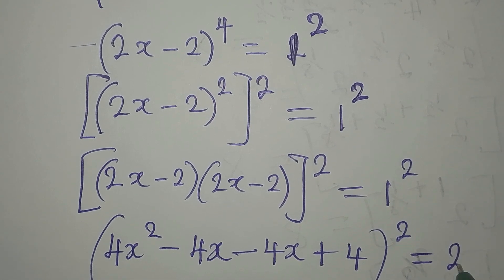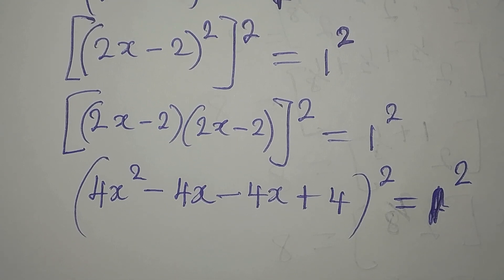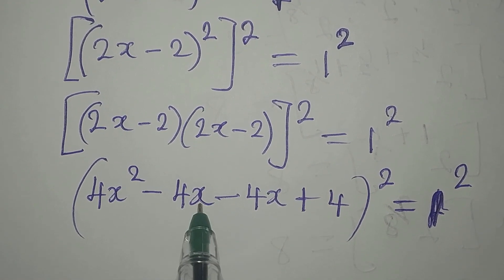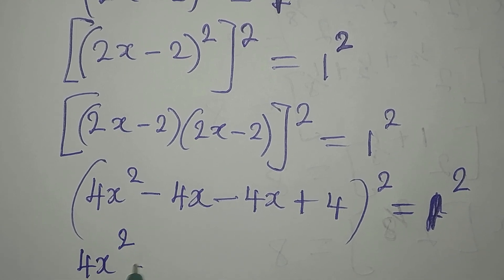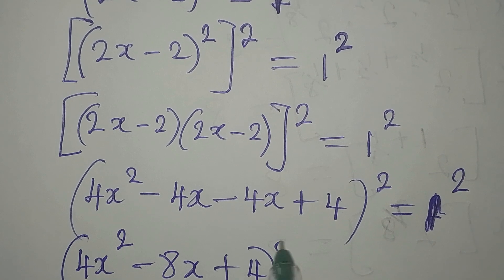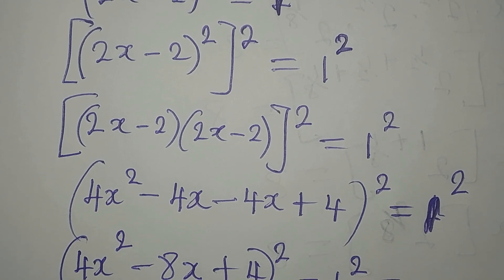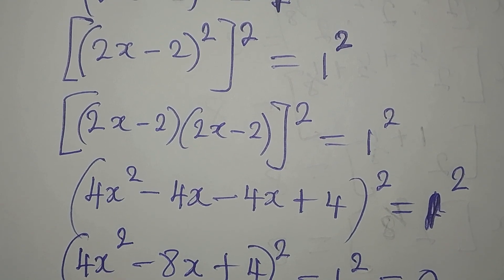We have plus 4, and minus 2 times minus 2 is plus 4, with a square on it, and this is equal to 1 to the power of 2. Now I want to bring this to the left. We add to get 4x squared minus 8x plus 4, everything squared, minus 1 squared, equals 0.